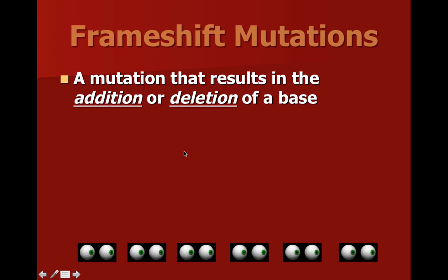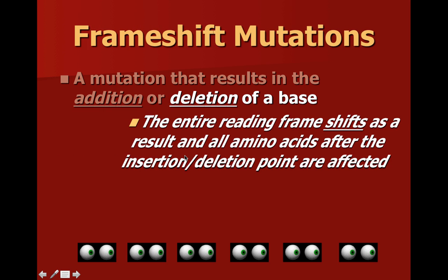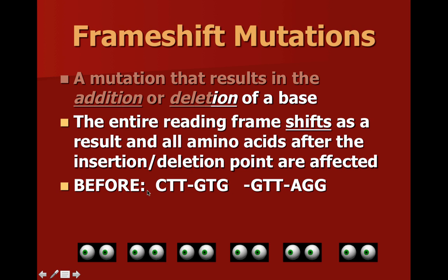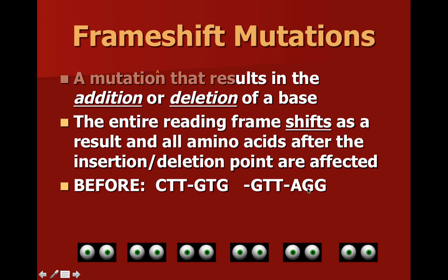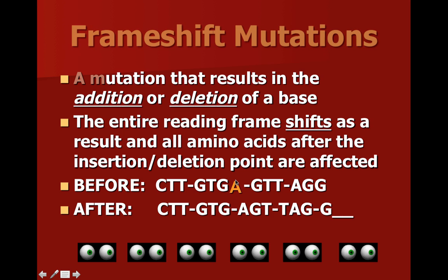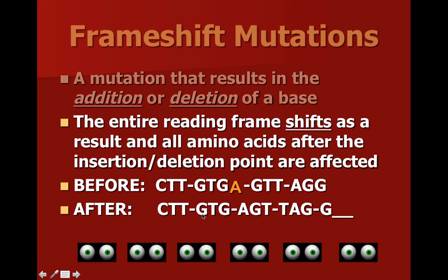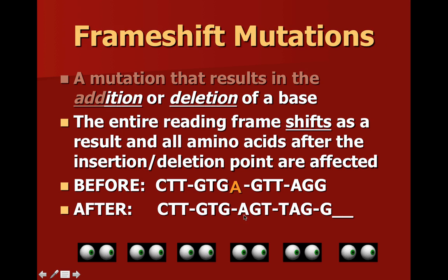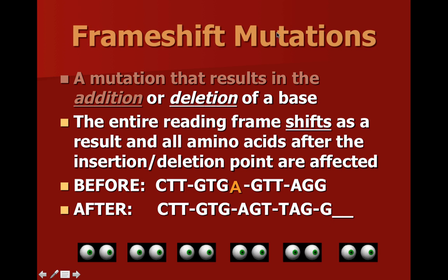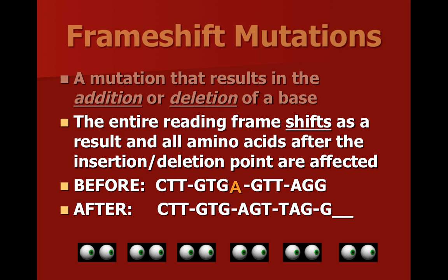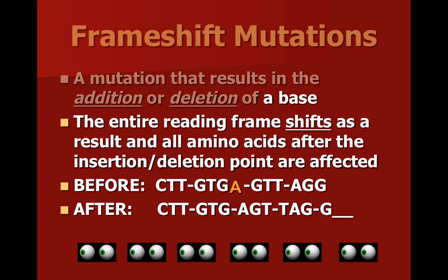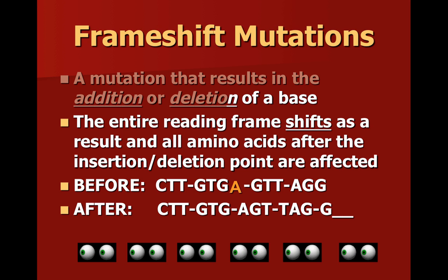A worse scenario is a frame shift mutation. If you have a reading frame — for example, CTT GTG across four codons — and an additional letter gets inserted, everything before the insertion point is fine, but all of the codons afterwards will be completely different when read in groups of three. This will have a very detrimental effect, likely resulting in an organism not developing properly or being naturally aborted. It's called a frame shift mutation because the entire reading frame shifts due to the inserted letter.